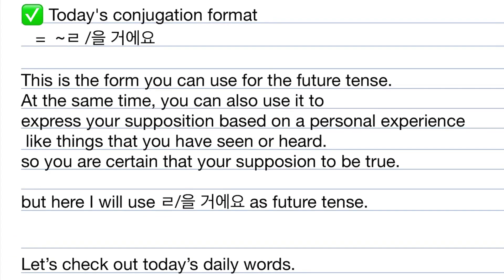Today's conjugation format is ㄹ/을 거예요. This is the form that you can use for the future tense. But also you can use it to express your supposition based on a personal experience — things that you have seen or heard — so you are pretty sure that your supposition is true. But today, I will use ㄹ/을 거예요 as just future tense.